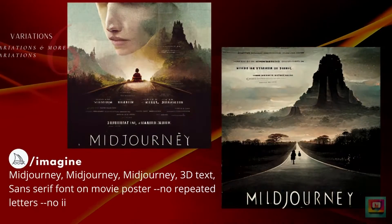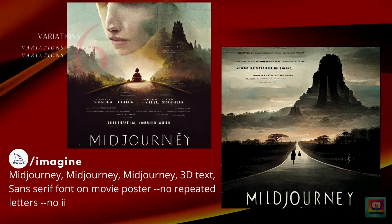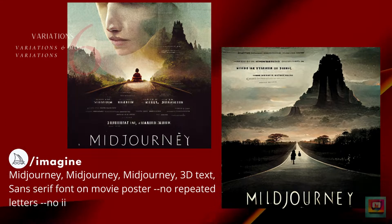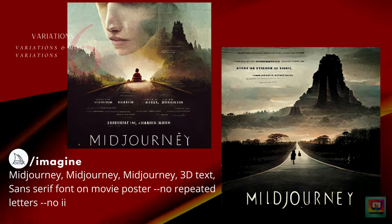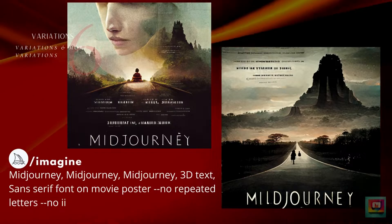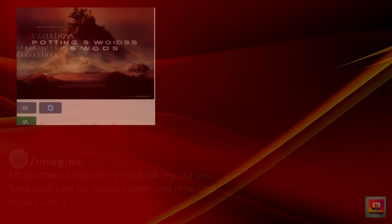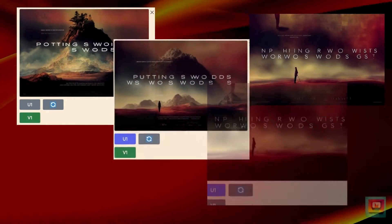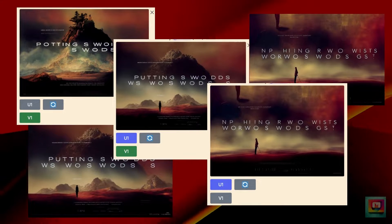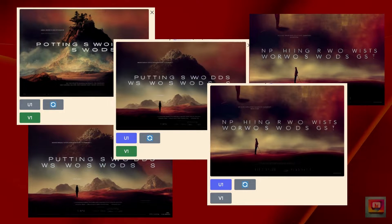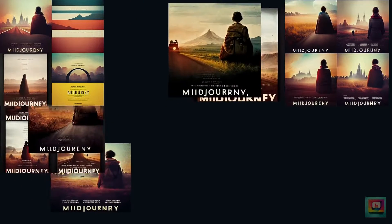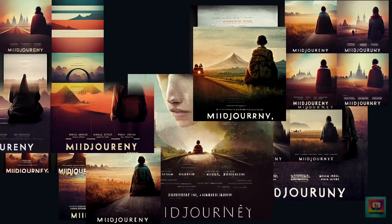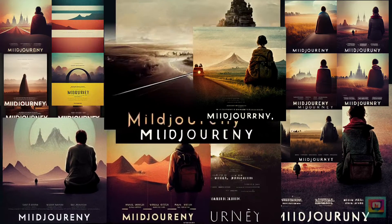Tip 6: Make variations. You won't necessarily get the text you want the first time — adding text to AI images sometimes needs many attempts. Create variations of the best renderings and keep making variations. If you see successful text, don't assume it came out right the first time. The text may get better, or it might get worse, and you'll have to backtrack and re-roll the original prompt. To create this Midjourney movie poster, I made variations, remixed, remastered, and upscaled a dozen or more times. Adding text to your AI image sometimes takes patience and persistence.